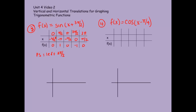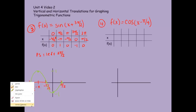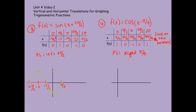So here is my table for f of x equals the sine of x plus 3 pi over 2. If you've done the table correctly, go ahead and repause to check when you've graphed it. I've now graphed my sine graph shifted to the left by 3 pi over 2. Now here is my table for the cosine graph with a phase shift of pi over 4 to the right. And there is my cosine graph shifted to the right by pi over 4 radians.